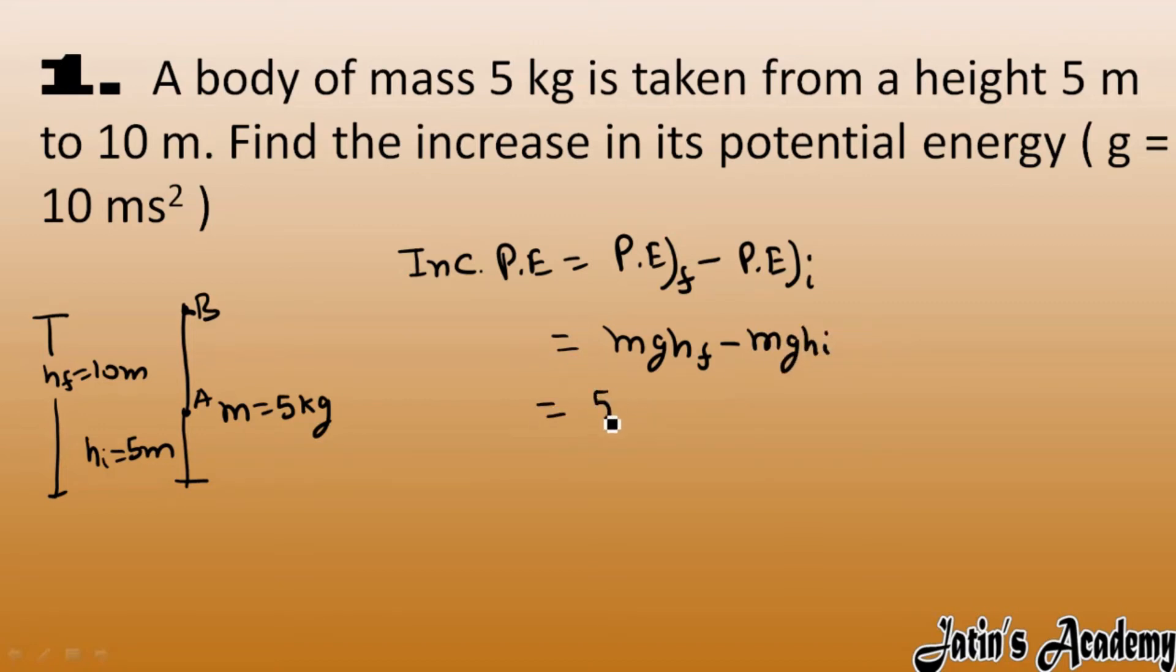Mass is 5 kg, g is 10, and final height is 10 meters. Mass is 5 kg again, g value 10, and initial height is 5 meters. We have taken it from 5 meters to 10 meters, so we get 500 minus 250, which equals 250 joules. The increase in potential energy is 250 joules.